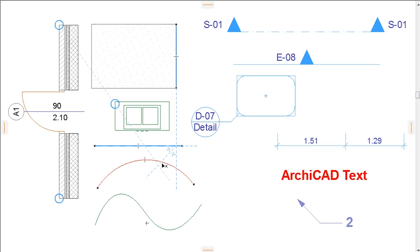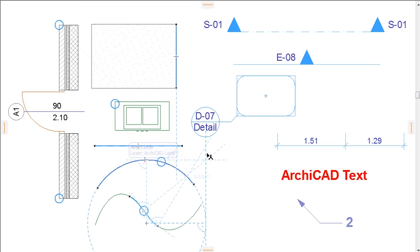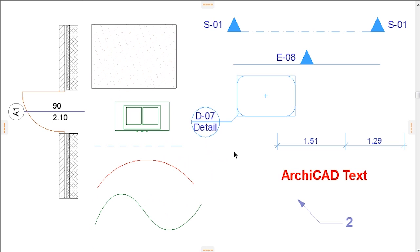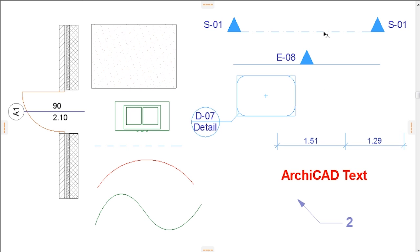The list of element types this applies to includes: any node or edge of section markers, elevation markers, interior elevation markers, worksheet markers, detail markers and change markers; any node or edge of story level markers; any node or edge of door markers, window markers and skylight markers; any node or edge of dimensioning chains; and any node or edge of text blocks or labels.